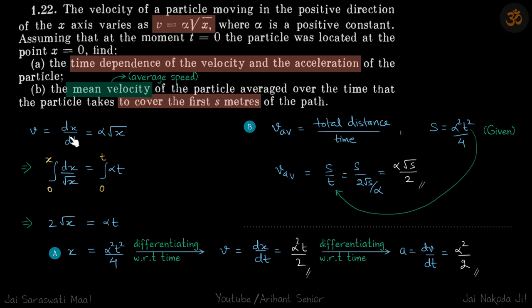Integrate this, put the root x down, and we'll get the relation between x and time, which is x equal to alpha squared t squared by 4. So differentiate it and we'll get velocity as a function of time.